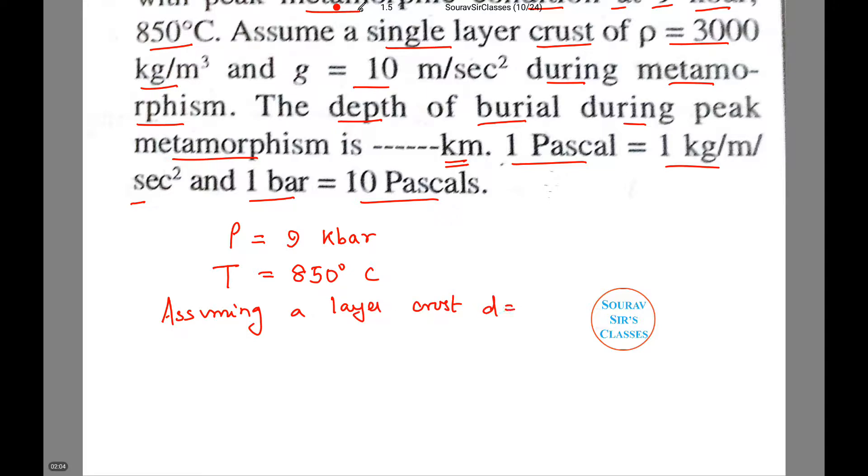ρ is equal to 3000 kg/m³, g is equal to this is already given. So P equals ρgh. We have P, we have ρ, we have g, so we can calculate h.